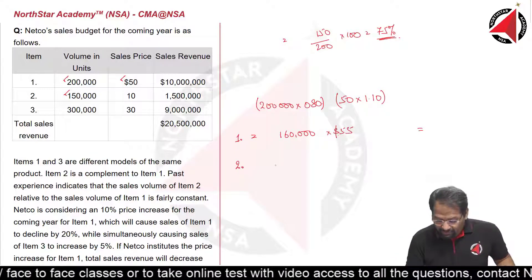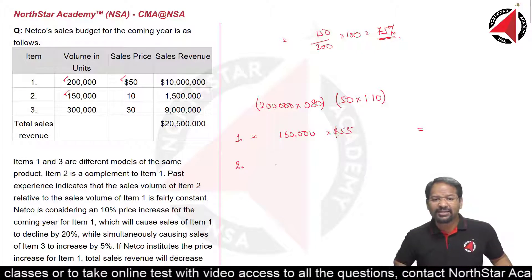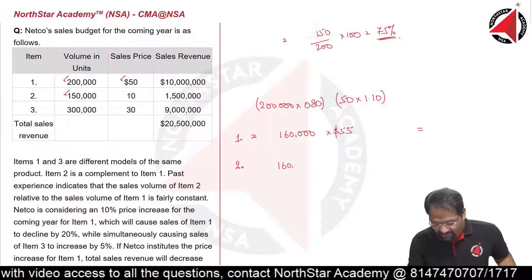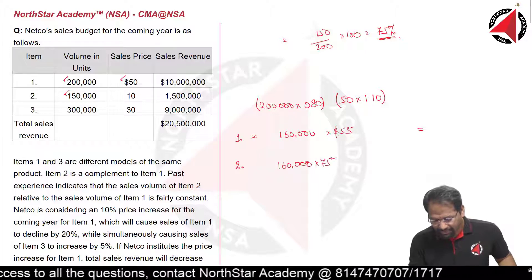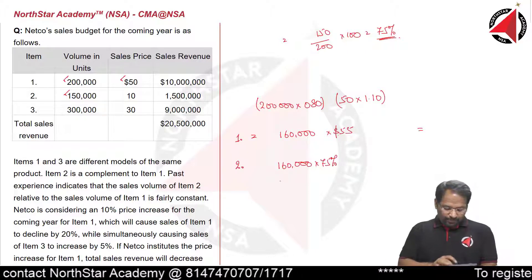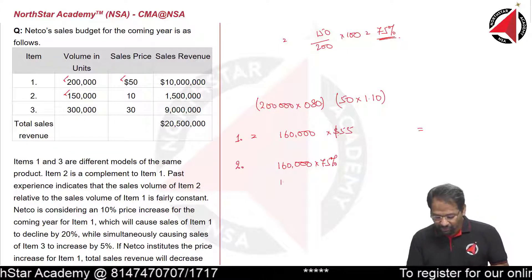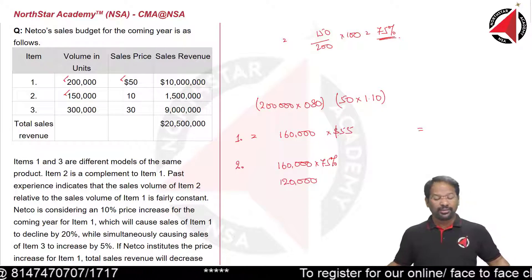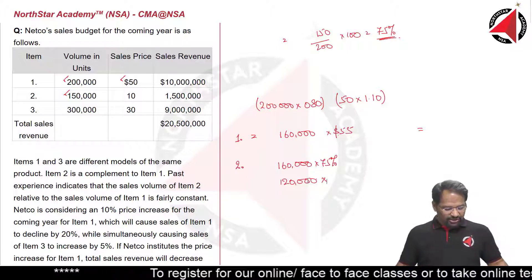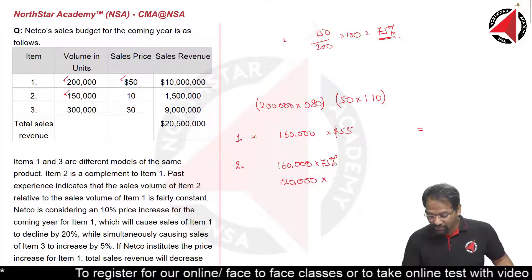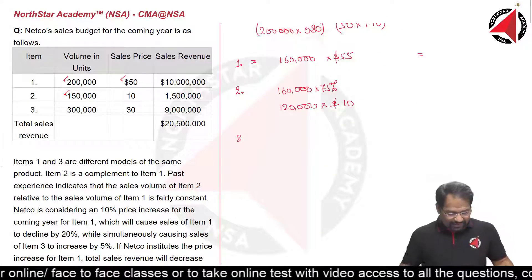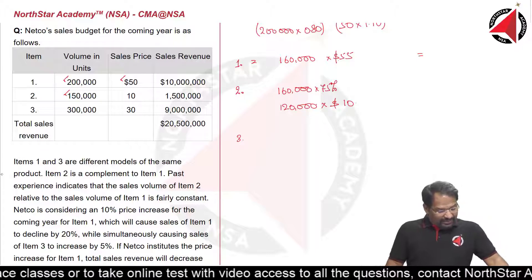Item 2 is 75% of the sales of Item 1. Since Item 1 is now 160,000 units, Item 2 will be 160,000 multiplied by 75%, which equals 120,000 units. The selling price of Item 2 — there has been no mention of any change — so Item 2 remains constant at $10 per unit.